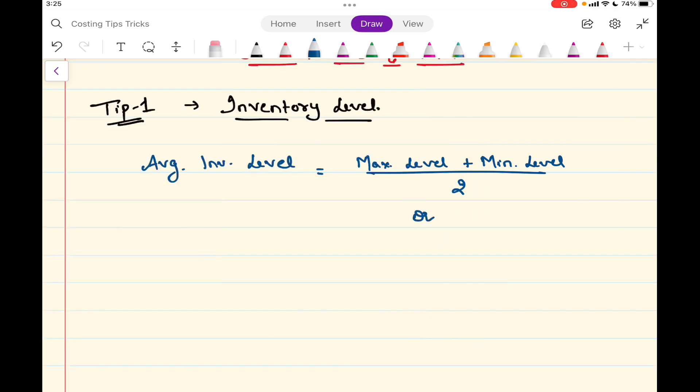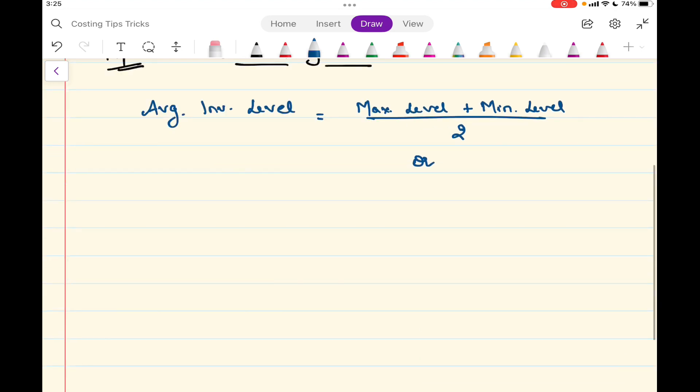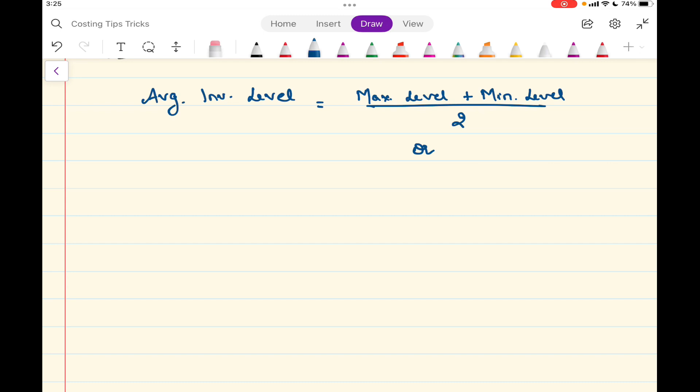And the second method of calculating the average inventory level is minimum level plus half of reorder quantity.